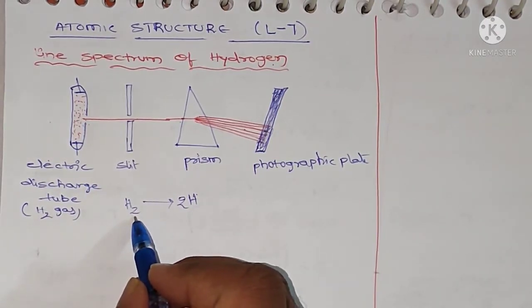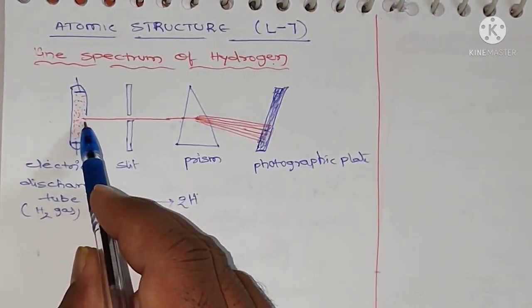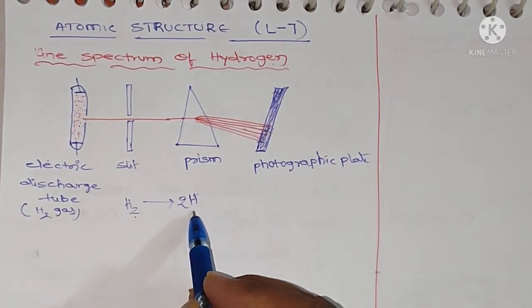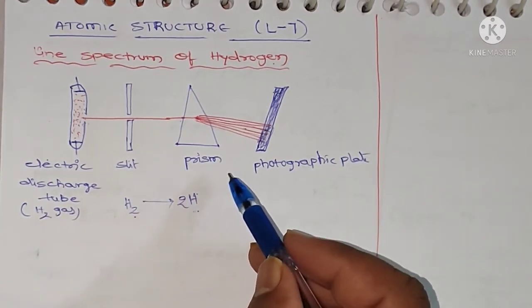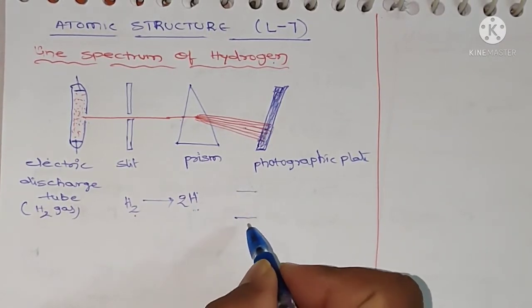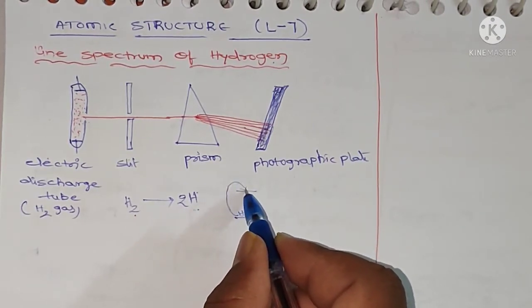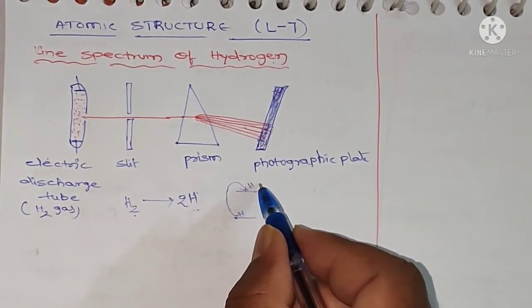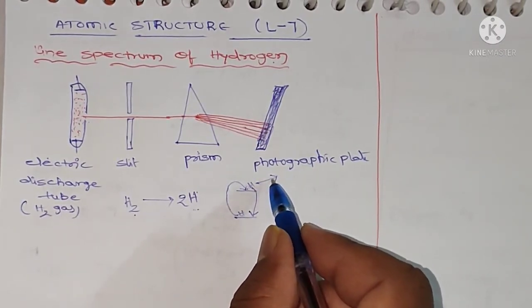The H2 molecules present in the electric discharge tube, when electric charge is passed through them, dissociate into hydrogen atoms. The hydrogen atoms are then excited to higher energy levels. This is the lower energy level and this one is the higher energy level. At higher energy levels the atoms are unstable, so the hydrogen atoms emit energy and come back to the lower energy level. This emitted energy gives the line spectrum.